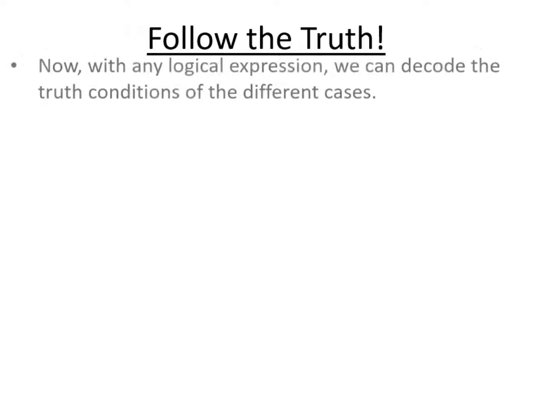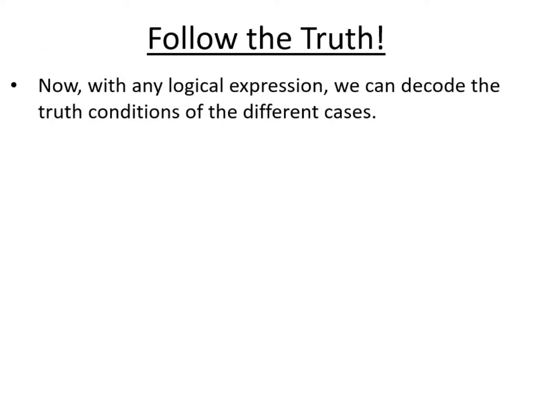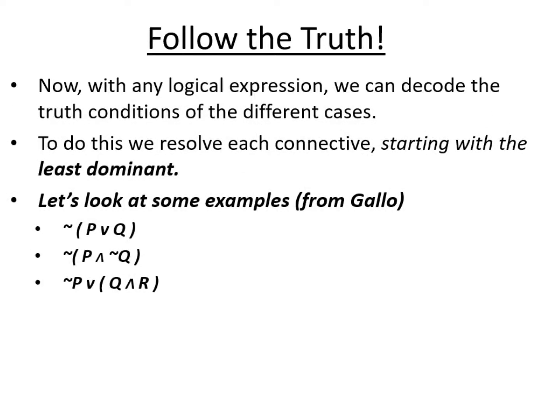For any truth table, we decode the truth conditions by resolving each connective starting with the least dominant. For example, looking at NOT(P OR Q): we have a disjunction inside the brackets and a negation outside. The least dominant is the disjunction because it's in the brackets, so we resolve that first using the disjunction truth table, then negate that entire column to get the output of the whole truth table.